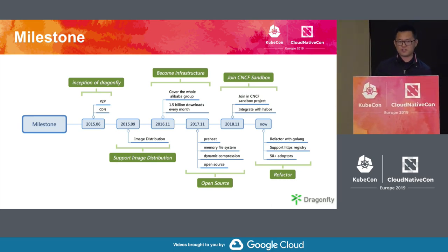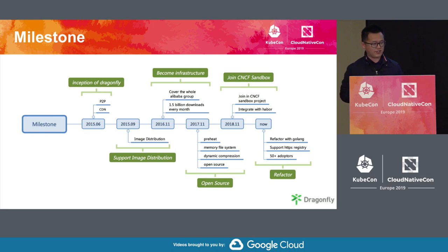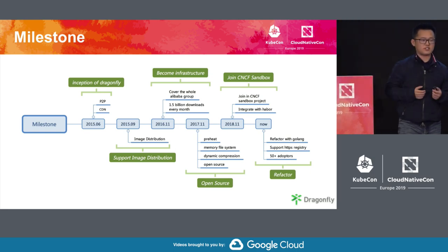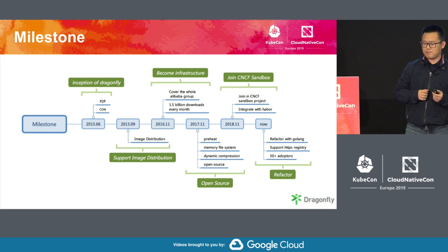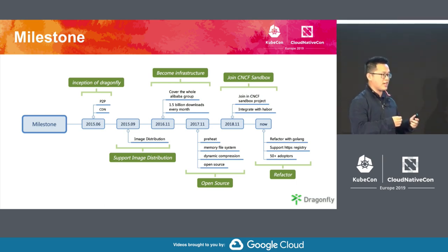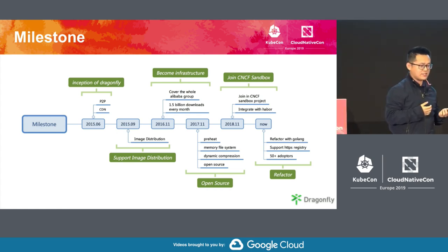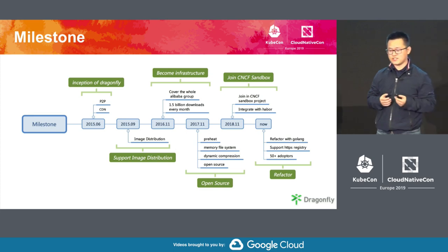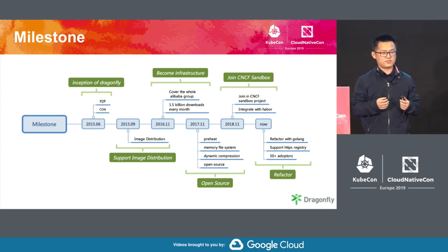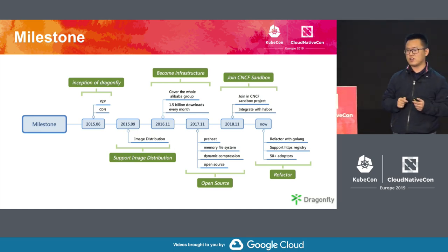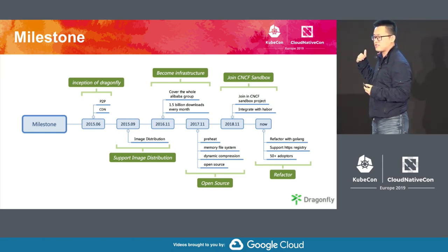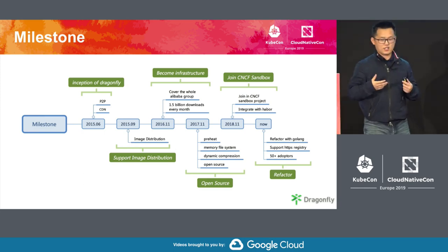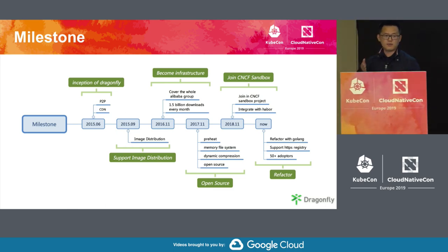We also added support for memory file systems at large scale. In our cluster we have lots of nodes with high-quality physical equipment. But in cloud environments, many VMs use network disks instead of local disk I/O. We found this was a shortcoming of Dragonfly, so we added memory file system support to reduce disk I/O.